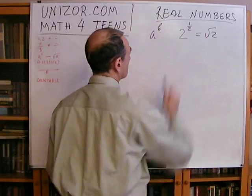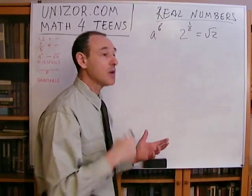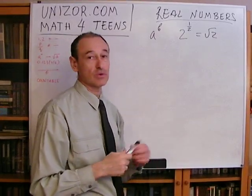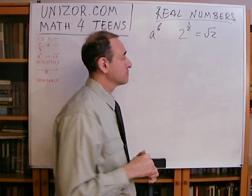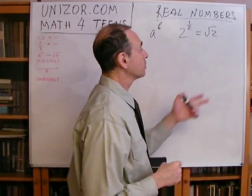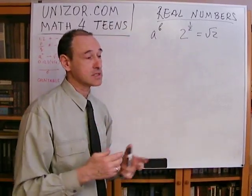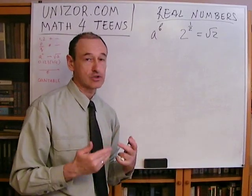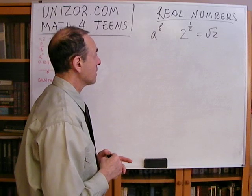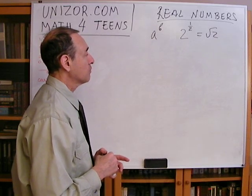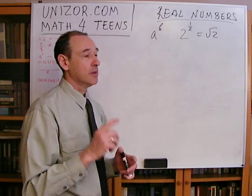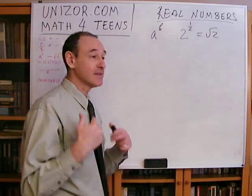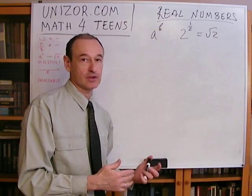By the way, the square root of two, or any square root of any number, is not the only way to get irrational numbers — there are many others, and we will probably talk about this. But what's important is that the number of irrational numbers is significantly greater than the number of rational numbers. And that's what I would like to discuss right now — I would like to count numbers which we have.